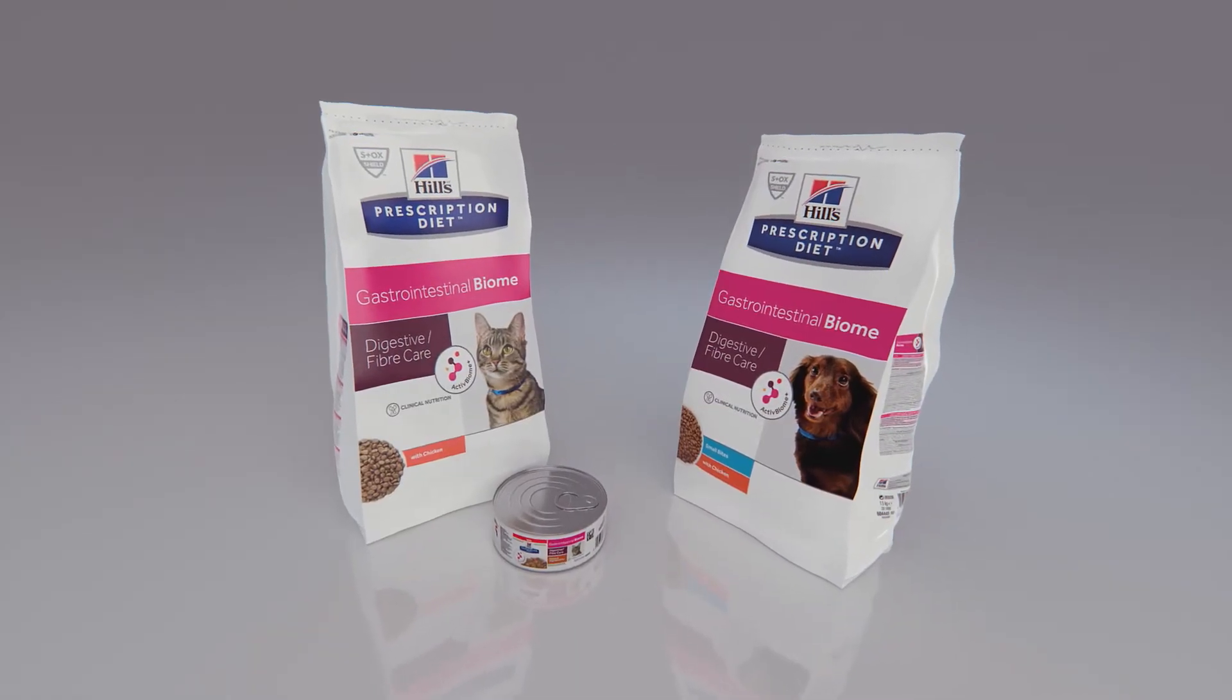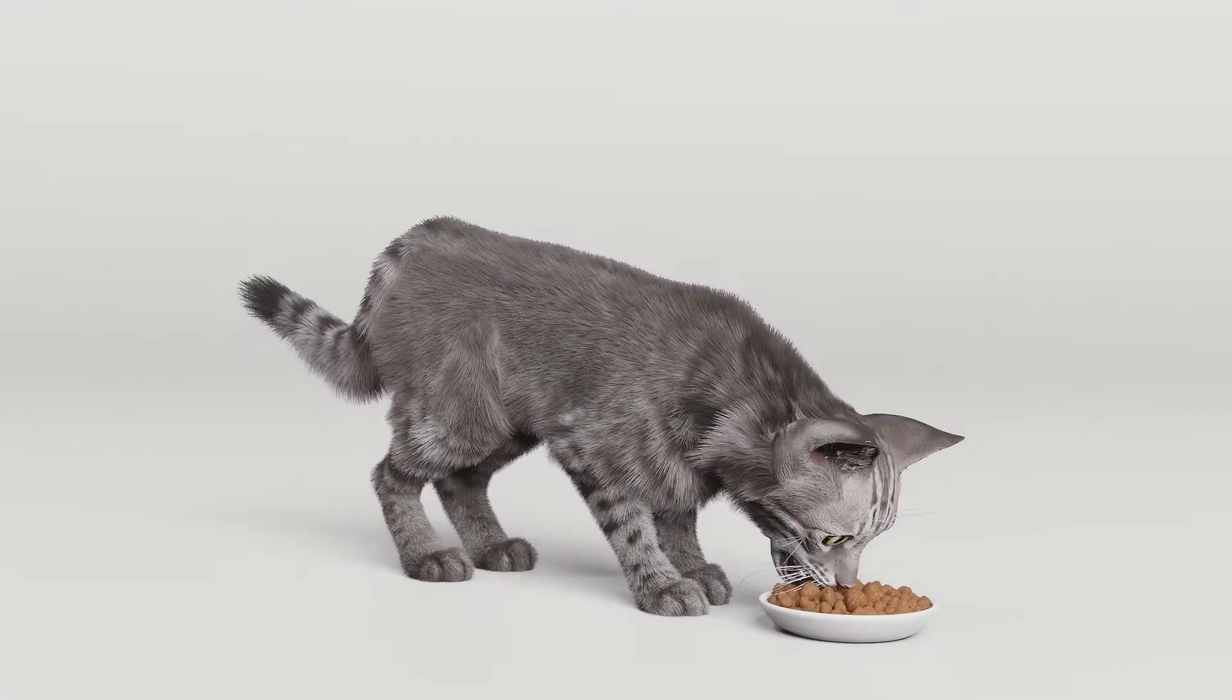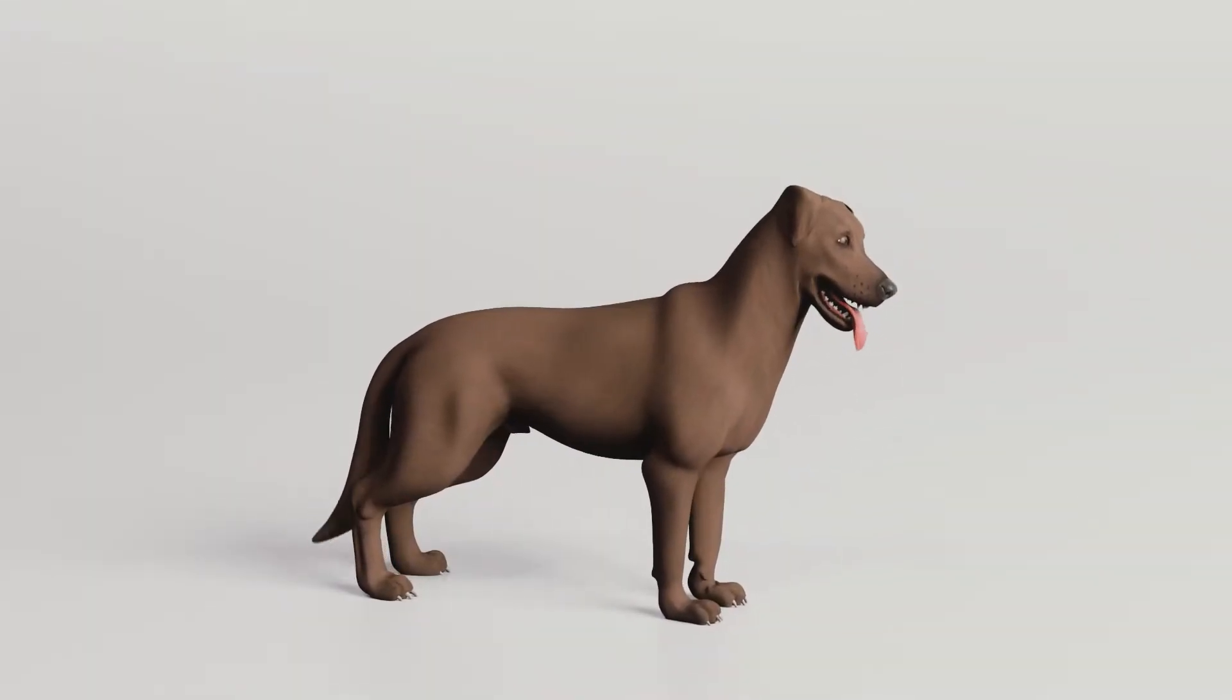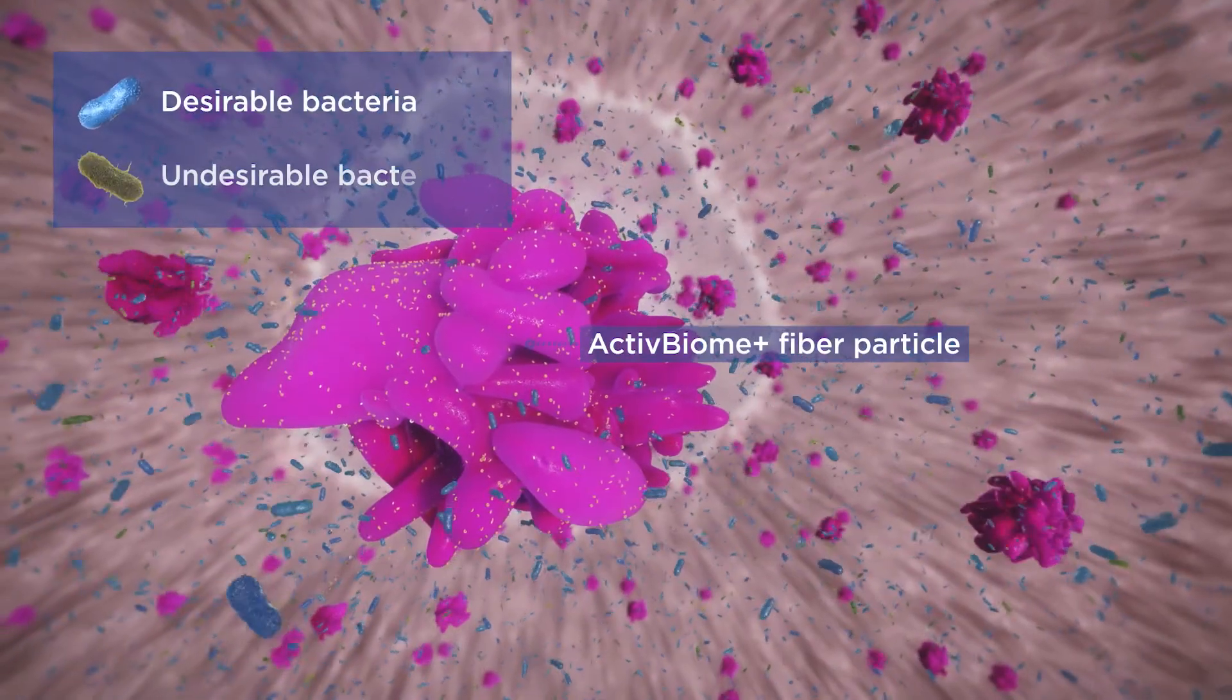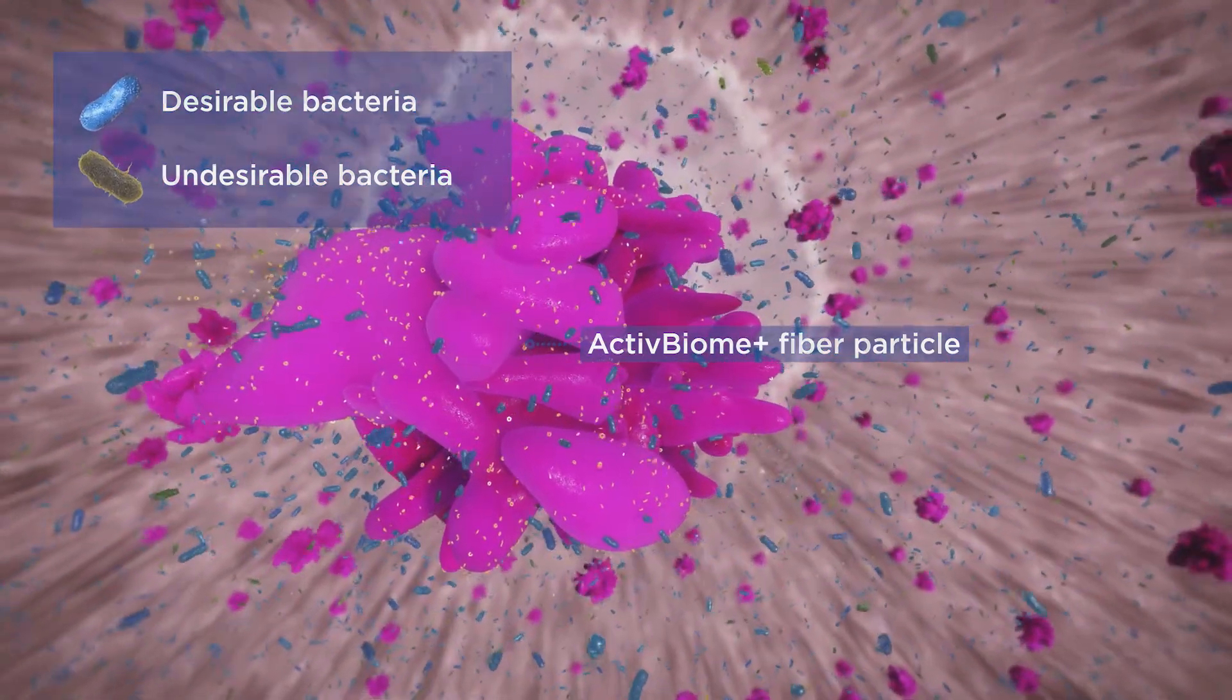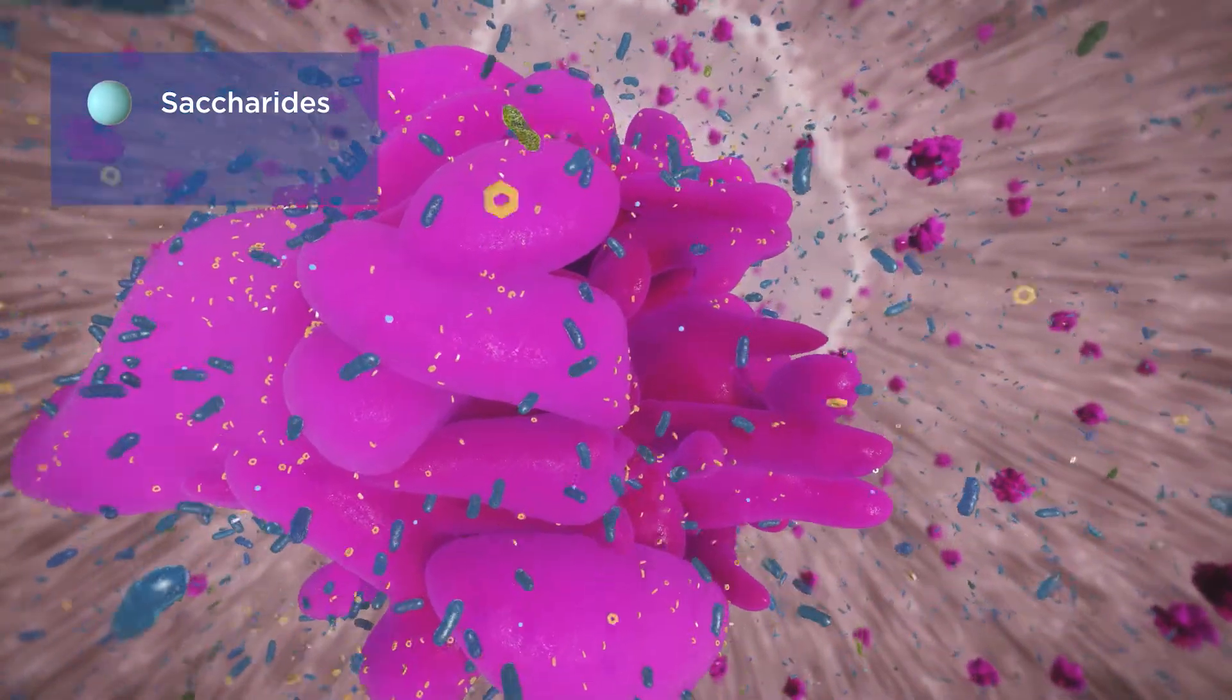Hill's Prescription Diet Gastrointestinal Biome with Active Biome technology feeds both pets and their microbes. Active Biome technology is a proprietary blend of active fibers that work synergistically to nourish the pet's microbes. The microbes ferment the fibers and produce gut-nourishing compounds.